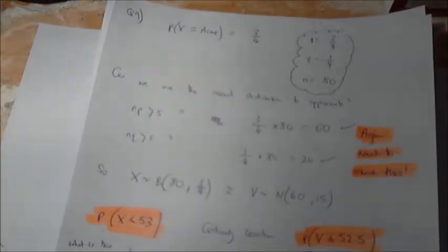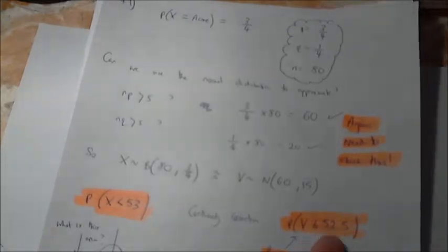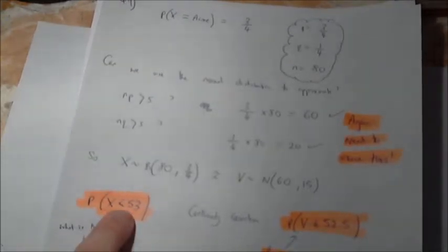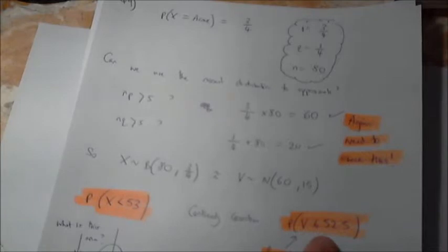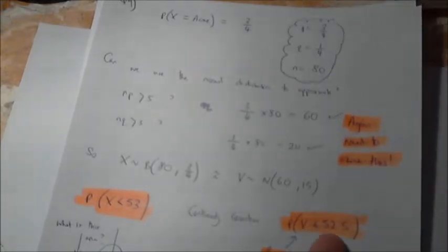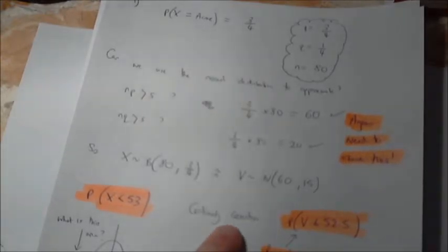Therefore, in terms of adding the 0.5, then for the normal distribution, it's going to be 52.5. A common mistake there would be to be 53.5. No, it can't be because it can't actually be 53. It must be 52, so therefore 52.5. And again,